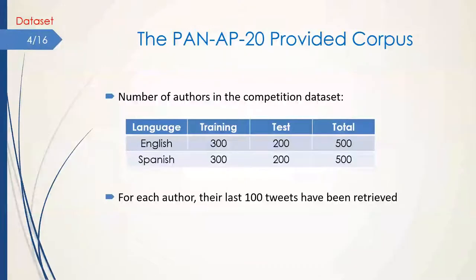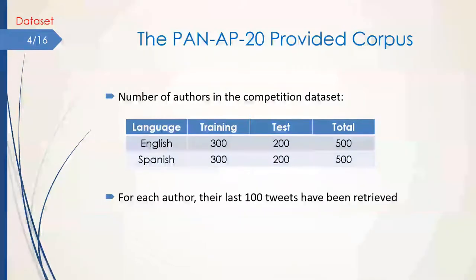The provided dataset supports two languages, English and Spanish. For each language, it contains 300 users, and for each user, their last 100 tweets have been provided. Also, an unseen test data containing 200 users for each language is used for evaluation.